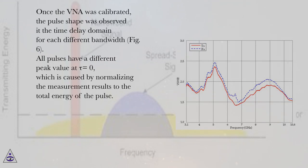Once the VNA was calibrated, the pulse shape was observed at the time delay domain for each different bandwidth, figure 6. All pulses have a different peak value at tau equals 0, which is caused by normalizing the measurement results to the total energy of the pulse.